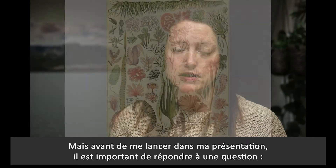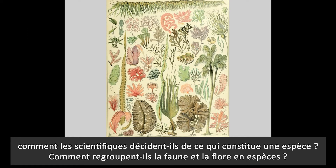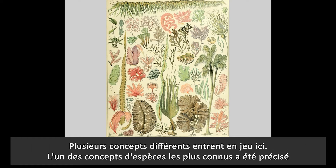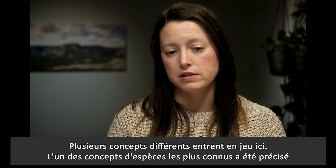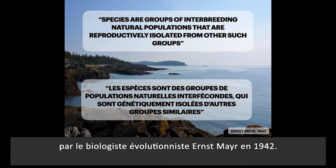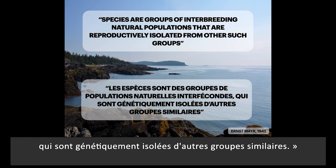Before I dive into these though, an important question to answer is: how do scientists decide what is a species? How do they group living things into entities that we call species? There are a couple of different concepts that come into play here, and one of the most well-known species concepts was summarized by evolutionary biologist Ernst Mayr in 1942.